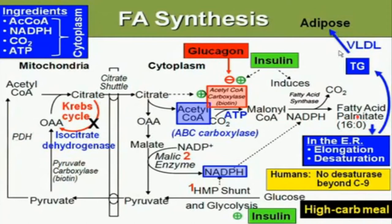Palmitate or the fatty acid enters the endoplasmic reticulum where elongation and desaturation take place. In humans, desaturation beyond carbon 9 does not occur. After elongation and desaturation, the fatty acids are converted into triglycerides, which are packed into VLDL.